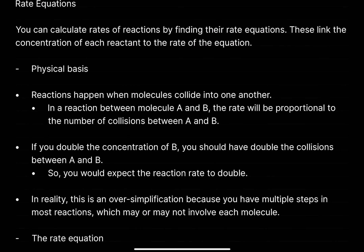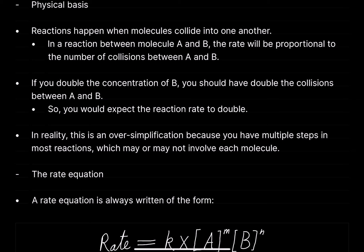You can calculate rates of reaction by finding their rate equations, which link the concentration of each reactant to the rate. Reactions happen when molecules collide. In a reaction between molecules A and B, the rate will be proportional to the number of collisions between A and B. If we double the number of collisions between A and B, we're doubling the rate of reaction; if we halve the collisions, we halve the rate.